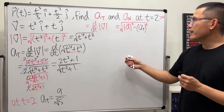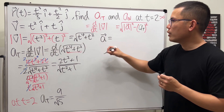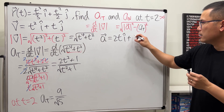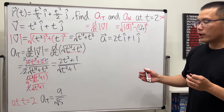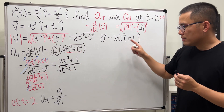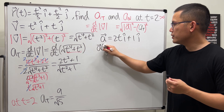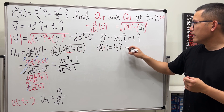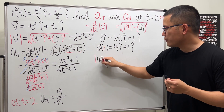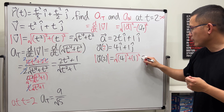Next, we work out Aₙ. We need the acceleration, so take the derivative of the velocity. The acceleration is 2t i + 1 j. Since we just need a number at t = 2, plug in: a(2) = 4i + 1j. The magnitude of a(2) is the square root of 4² + 1² = √17.